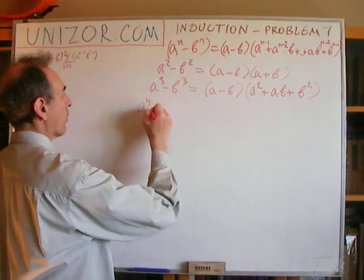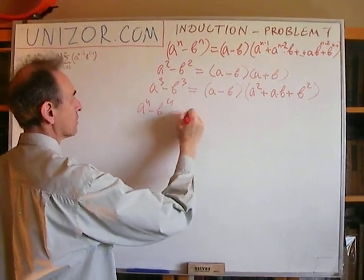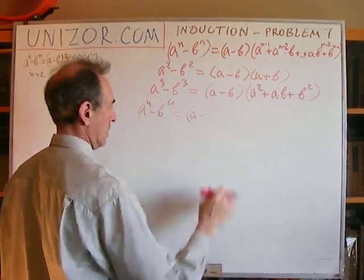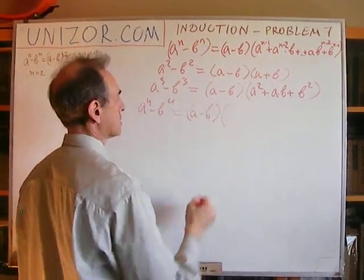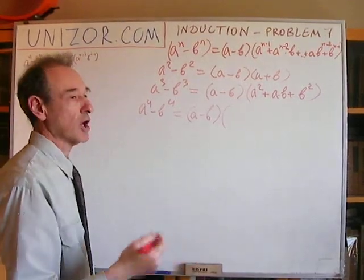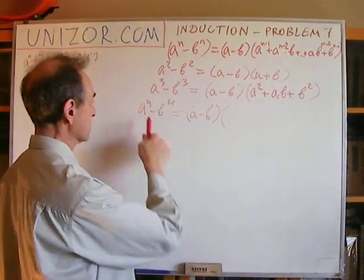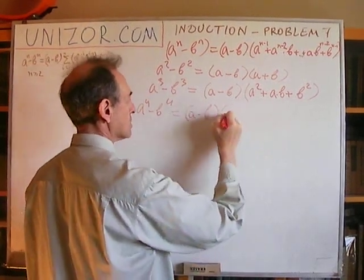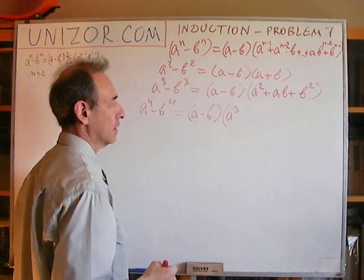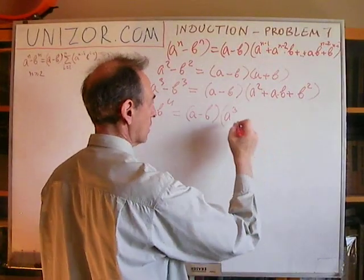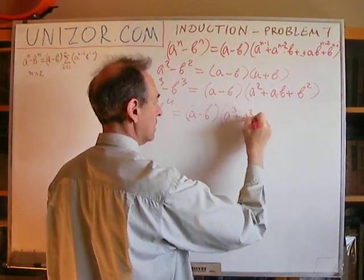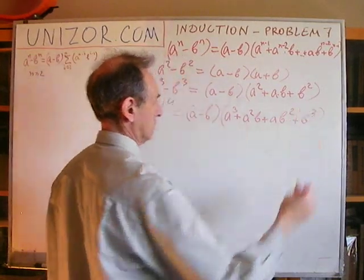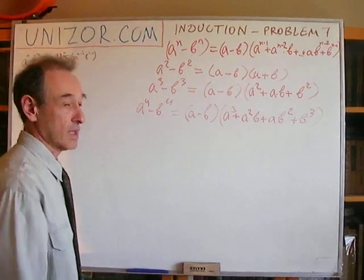Similarly, a to the fourth minus b to the fourth equals a minus b times a polynomial of the third degree. We start from a to the third and finish with b to the third, decreasing a and increasing b along the way. So you get the picture.